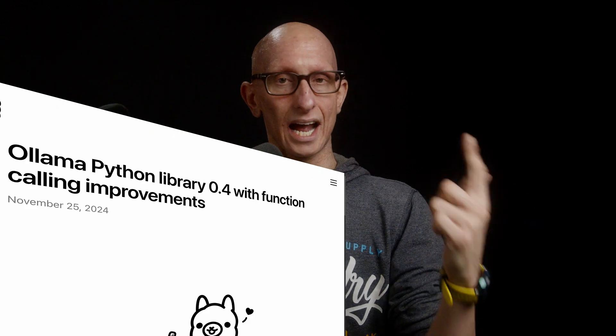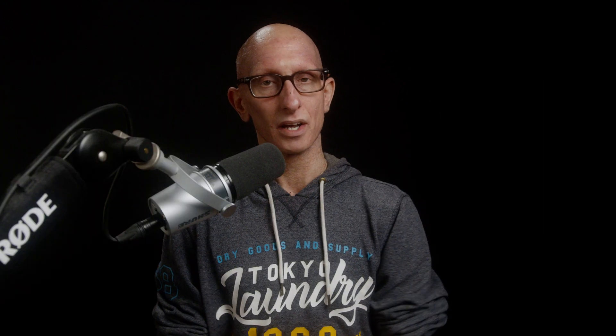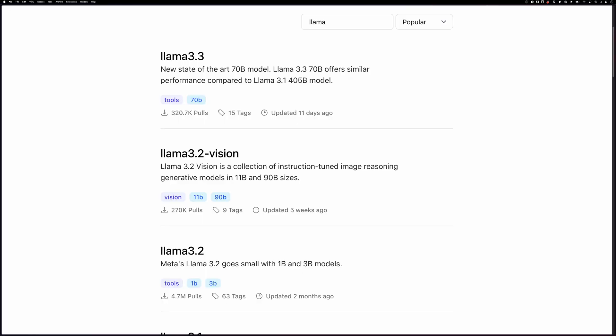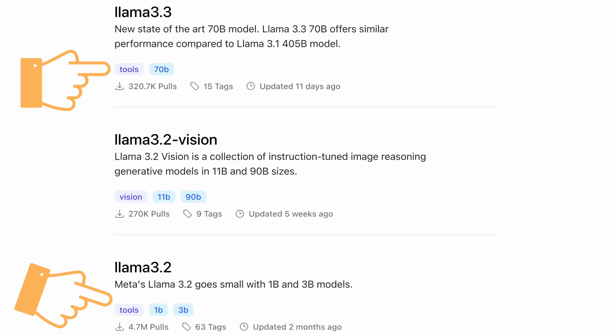Next, let's change the model to Ollama. This didn't used to work well, but Ollama recently added support for function calling and structured output, and now it seems to be a lot better. When you're choosing an Ollama model, you need to make sure it has the tools tag under the models library page, otherwise you'll get an exception when you try to use it.